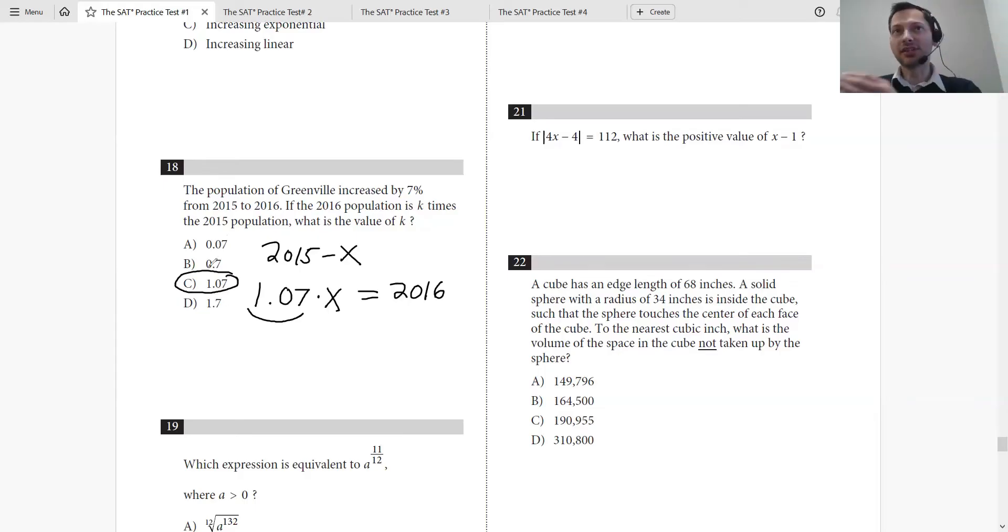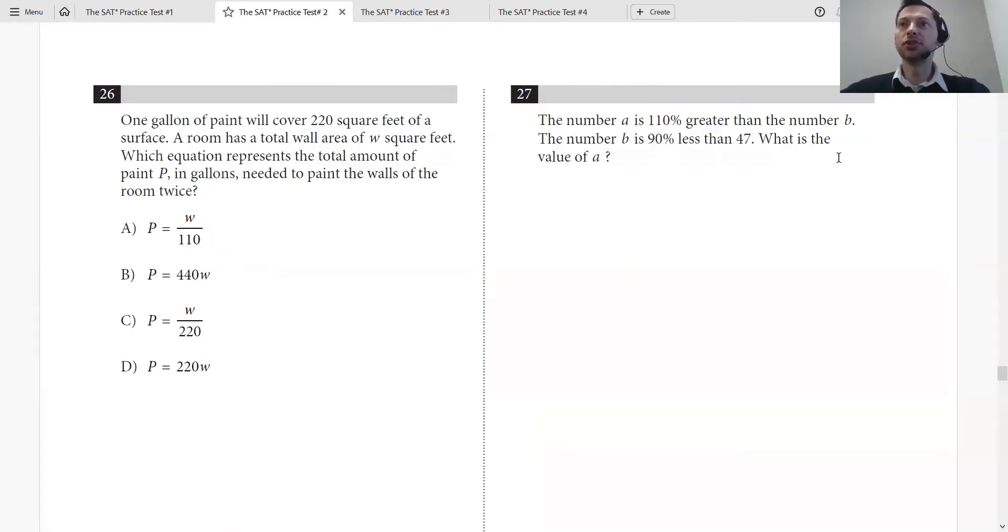By understanding this rule, it actually helps you. Let's move on to the next question, number 27. The number A is 110% greater than the number B.